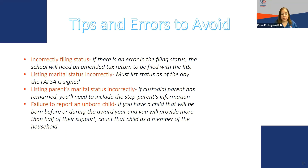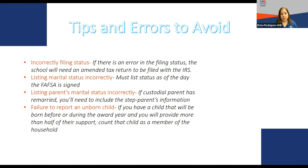An example of an incorrect filing status: if your parents are married but do not file as 'married filing jointly' or 'married filing separately' — for instance, if both file single or one files head of household — that is incorrect. As a married couple, you must file either married filing separately or married filing jointly. If we find upon review that taxes were filed incorrectly, you may be asked to get them amended. Regarding marital status: you must list your status as of the day you sign the FAFSA.